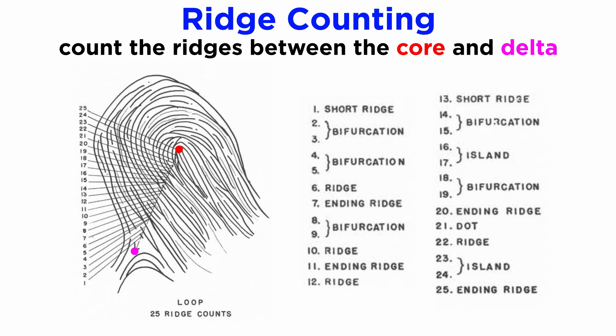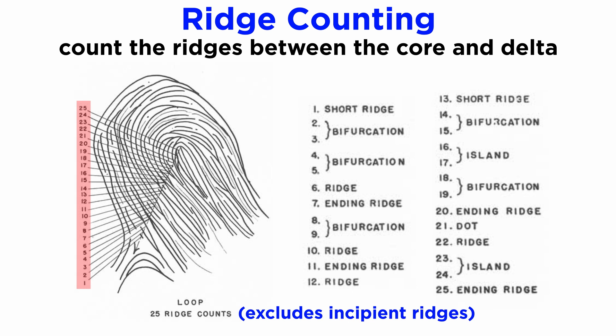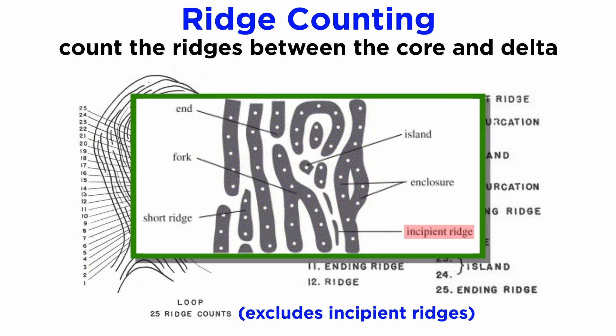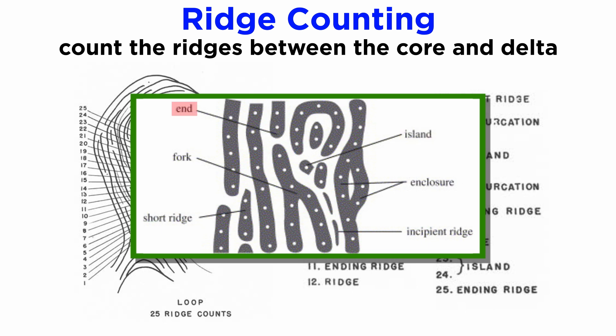Discussing the rules to establish the core and delta will be beyond the scope of this tutorial. When counting all the ridges intervening with the imaginary line, it does not include incipient ridges. An incipient ridge is an immature friction ridge that will look thinner and shallower than the ridges surrounding it. They are not considered in ridge counting because they may or may not appear in fingerprint impressions. However, if Galton details such as an island or a dot ridge appear on the imaginary line, they are given one ridge count. An abrupt ending of the ridge on the imaginary line is also given one ridge count.